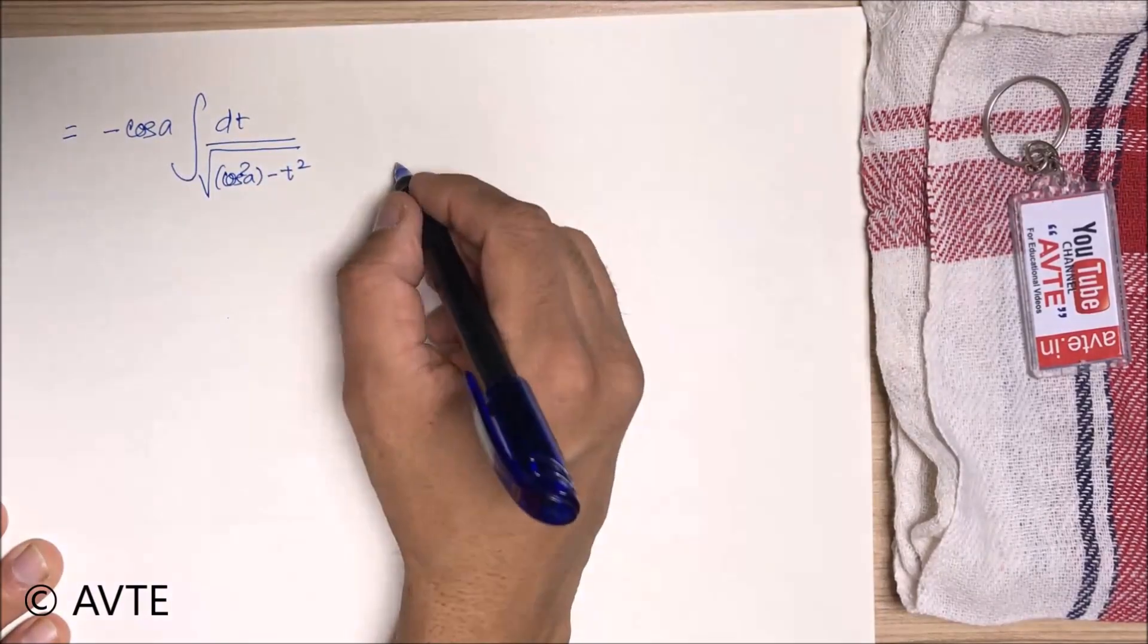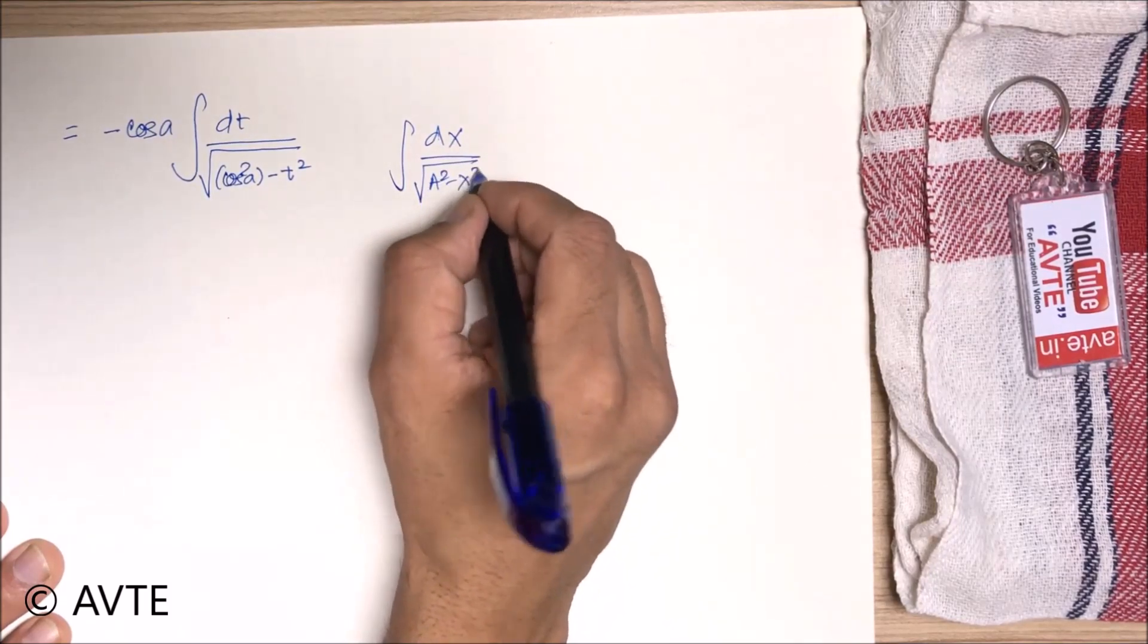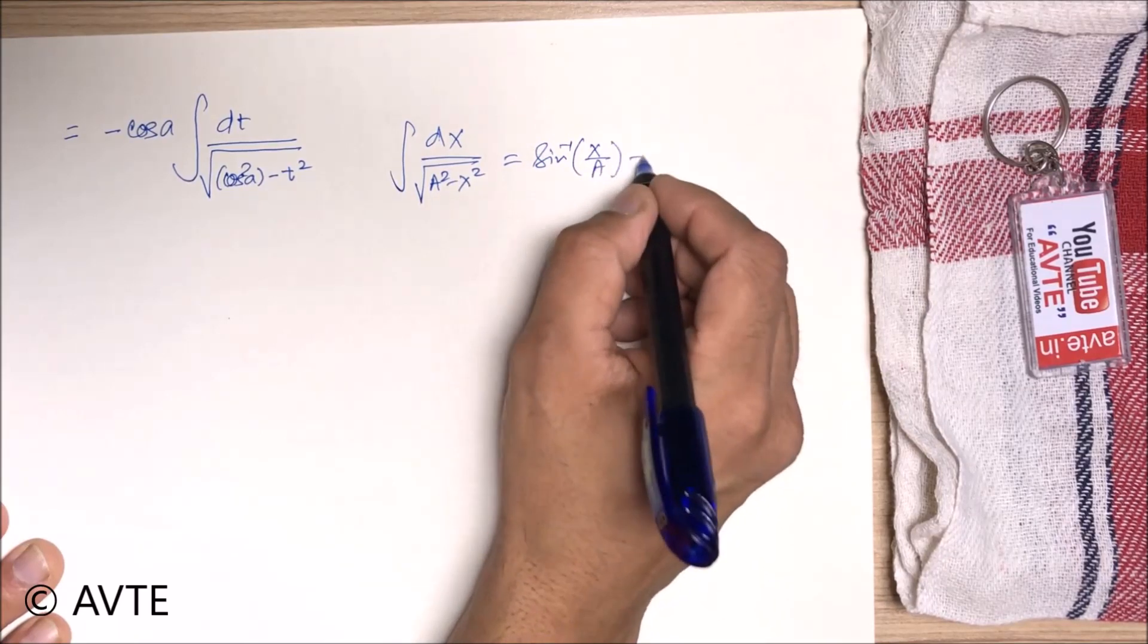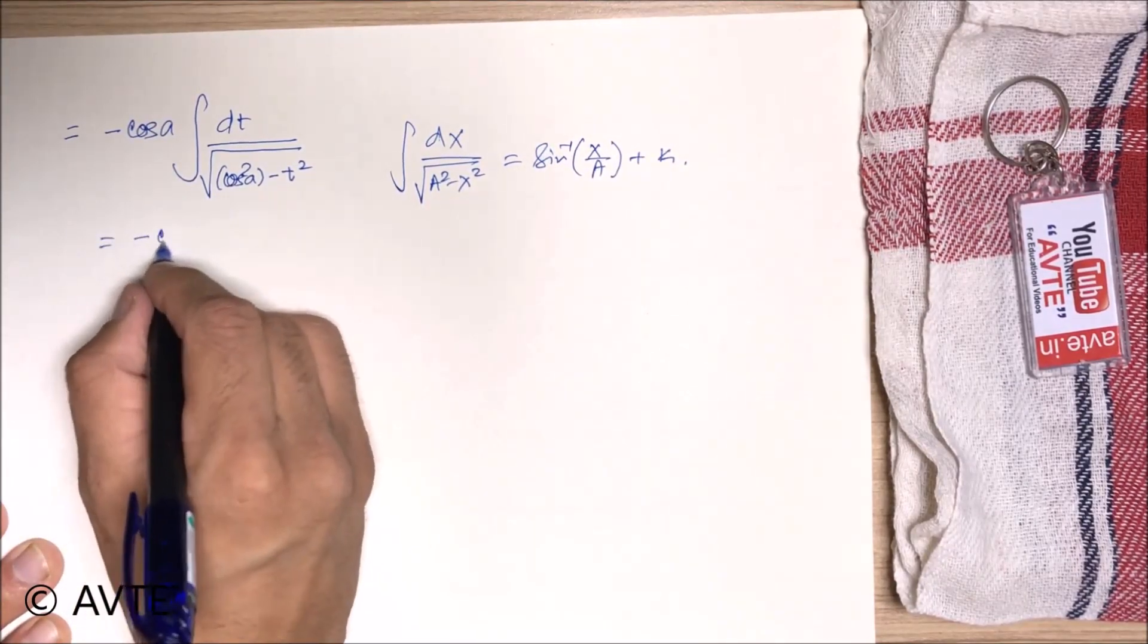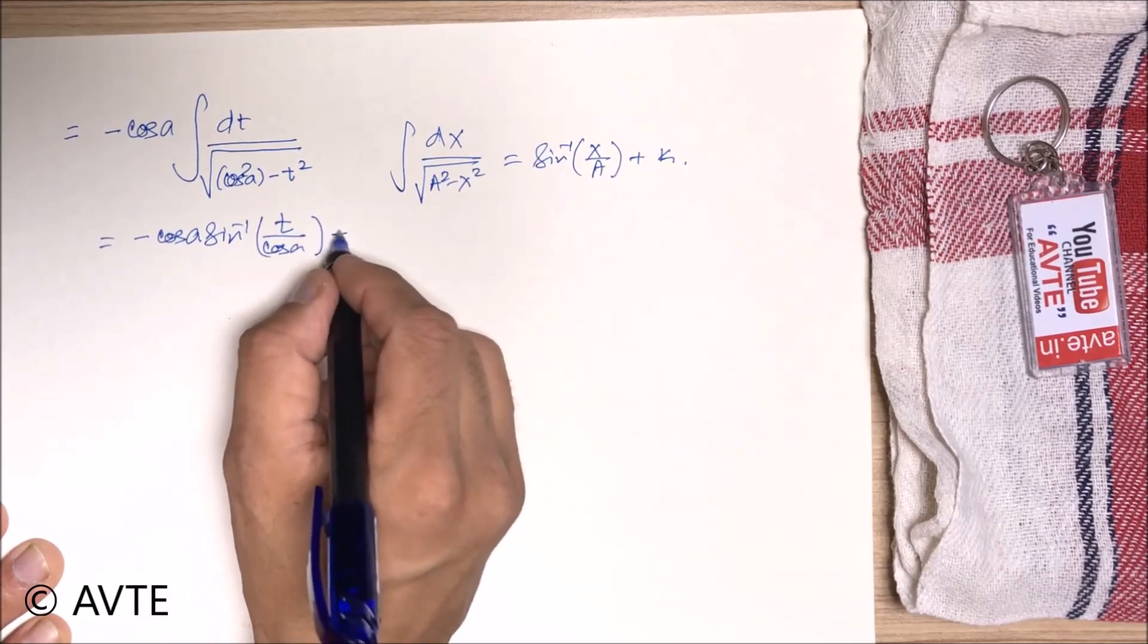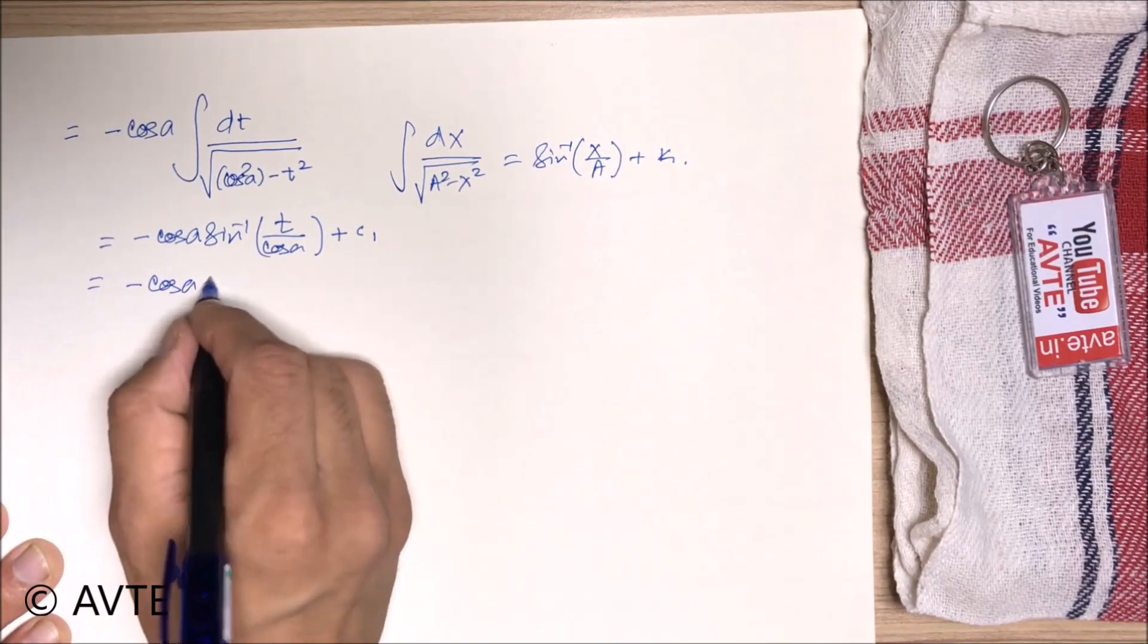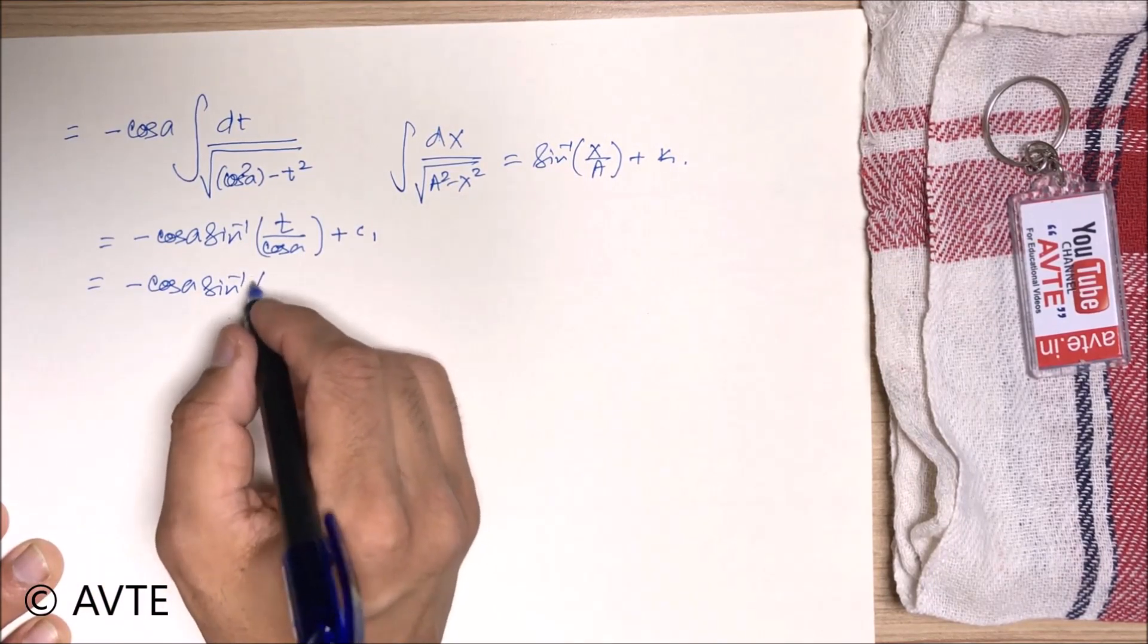So this is the special integral for sin inverse of x by a plus some constant. So the answer will come as minus cos a sin inverse of t over cos a plus the first constant. And the value of t if you remember is cos x.